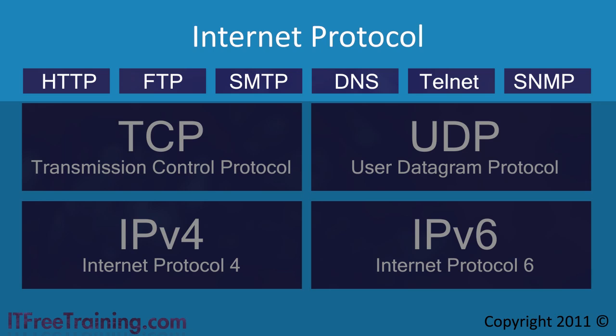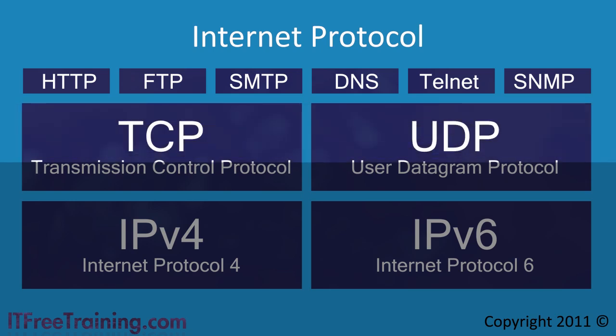When software uses the IP protocol, it must first decide if it is using reliable or unreliable transmission. Reliable transmission ensures that packets are sorted so that they are delivered in the same order that they were sent. It also checks to see if the packet arrived. If the packet was lost in transmission, another copy of the packet is sent.